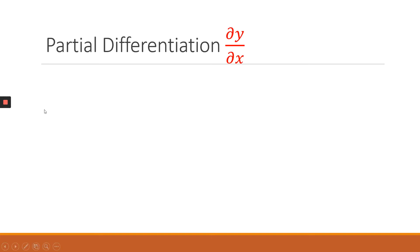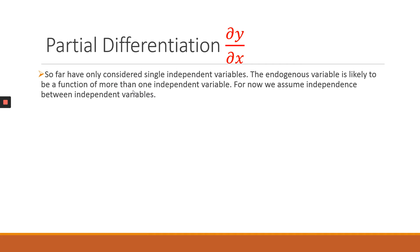So moving on, we're going now to look at partial differentiation. With partial differentiation, what we're basically saying is we're allowing our function y to be explained by more than one independent variable. In essence, we're saying the endogenous variable y can be influenced to change if more than one exogenous variable actually changes.